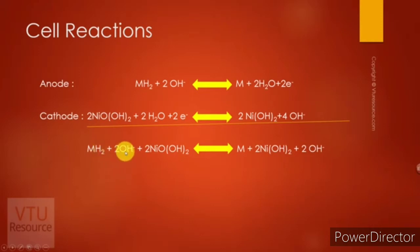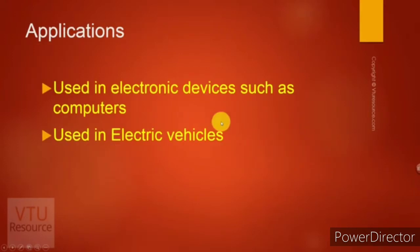The overall reaction: metal nickel hydroxide with hydroxyl ions and nickel oxy-hydroxide gives metal nickel hydroxide and two hydroxyl ions. Why are we getting two hydroxyl ions here? Because in anodic reaction two hydroxyl ions are used up, whereas in cathodic reaction four hydroxyl ions are liberated. Therefore, four minus two is two.